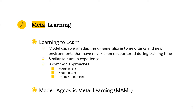Now I'm going to introduce meta-learning. Meta-learning models are capable of adapting to new tasks and environments never encountered before, similar to human experience. There are three common approaches for meta-learning. The first is the metric-based approach, based on measuring similarity between two data samples, like k-nearest neighbors, exploiting kernel density estimation. The second is model-based, where the model tries to update its parameters rapidly through its internal architecture or controlled by another model. In the optimization-based approach, the optimizer is designed such that it can converge in a few small steps.